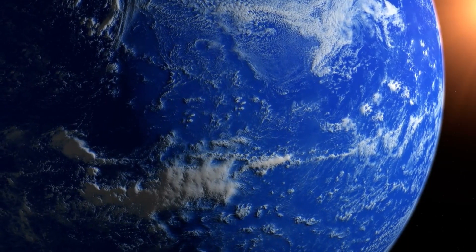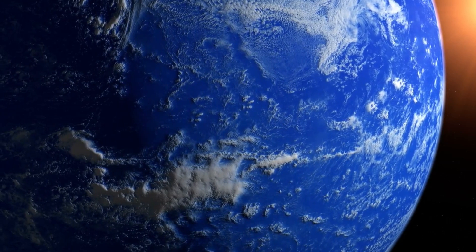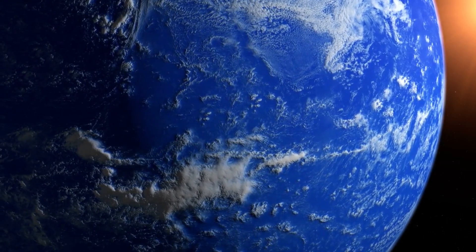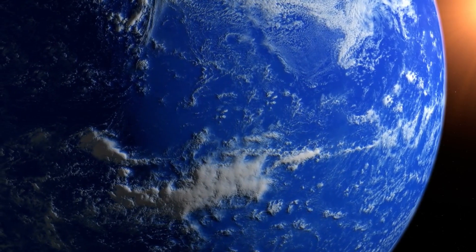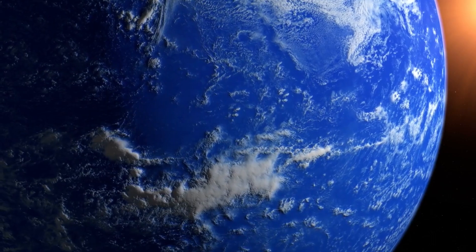In contrast, TOI-700E orbits a red dwarf, a type of star known for its stellar flares and varying luminosity. Studying these two planets side-by-side allows scientists to compare how different star types influence planetary atmospheres and surface conditions, providing invaluable insights into the factors that might make a planet habitable or not.